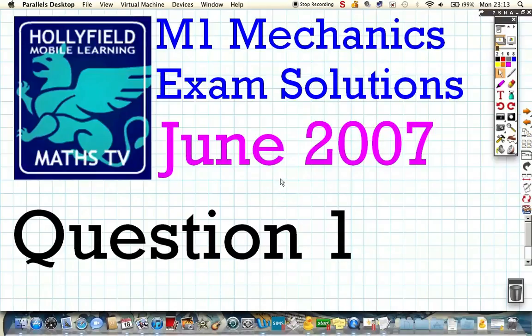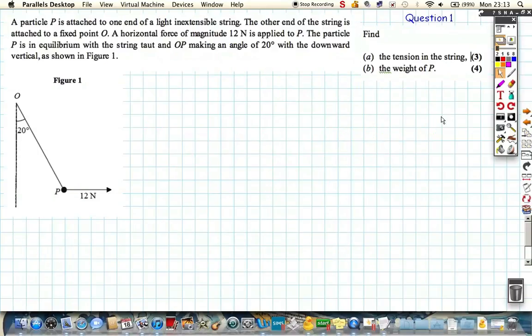So, the M1 Mechanics paper, June 2007, question number 1. We've got a particle P attached to a string, and we've got a horizontal force of 12, and at the moment the particle is in equilibrium, that's important. That means there's no motion, and it's going to make some of our equations a little bit easier.